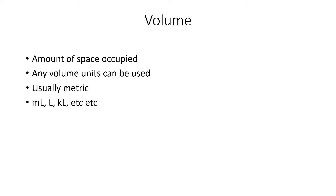Our next property is volume. Volume for gas is just like volume for anything else — it's the amount of space that's occupied. Any volume units can be used, but generally we're going to lean towards the metric ones. So if you had a little bit of gas, you might be using milliliters; more gas, liters; even more, kiloliters. Volume is just the amount of space that gets occupied.